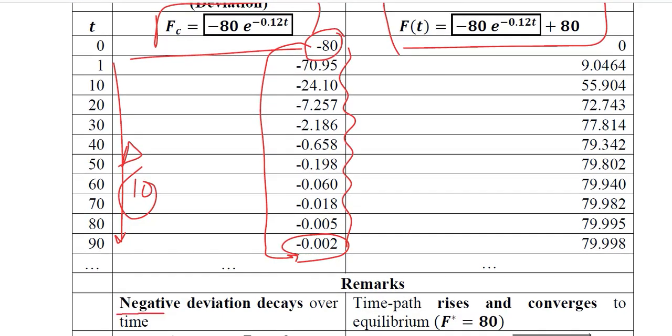Here we have noted this observation. The value in absolute sense is declining so there is a decay as the negative sign was present in the exponential part. We have the time path value and that is obtained by adding the particular integral Fp to the complementary function.